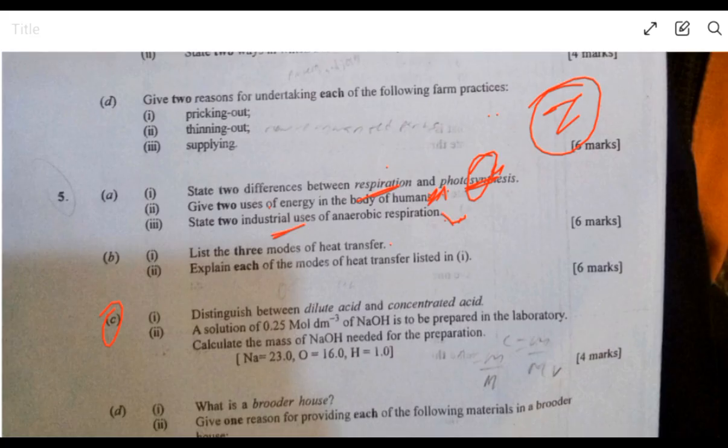Question 5C has to do with the difference between dilute acid and concentrated acid. With dilute acid, the acid content as compared to the solvent is low. The acid content is low while the solvent is high. With concentrated acid, the solvent is low but the acid is very high. Concentrated acid could be corrosive.